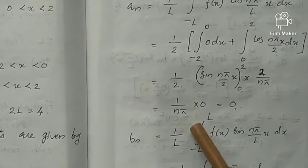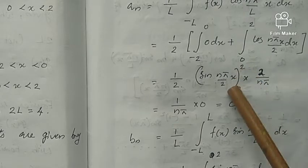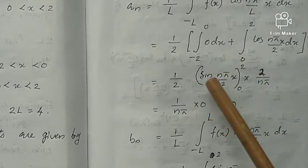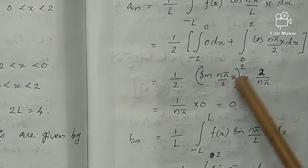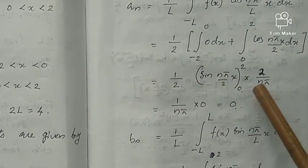...as 1/(nπ) times 0. This 0 we got by substituting the values. If you substitute, we get sin(nπ) which equals 0, and substituting 0, sin(0) also results in 0, so this term is 0.